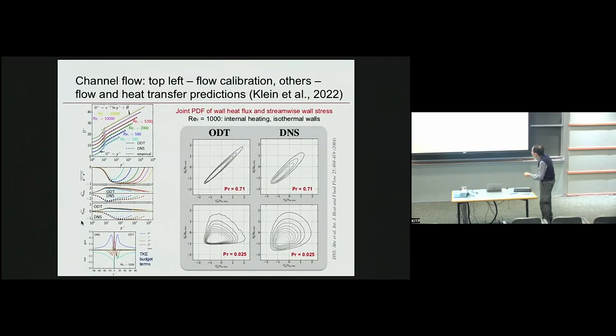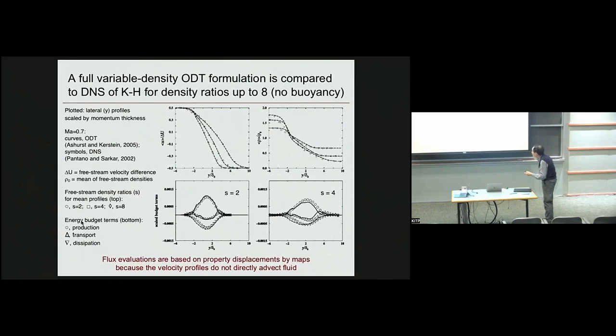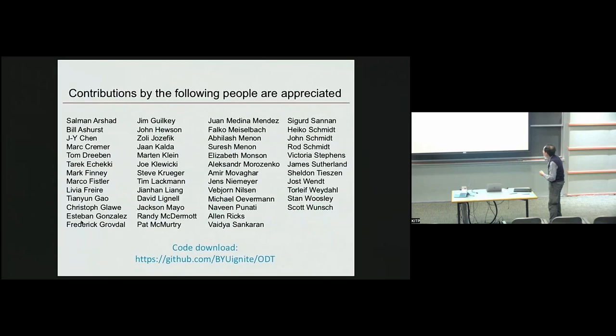Here we have a heated channel. We have the moments, and here we have this is the turbulent kinetic energy budget, but this is the joint PDF of the instantaneous wall shear stress and the instantaneous wall heat flux, and ODT DNS, and it shows the Prandtl number dependence. This one, this discussion of Kelvin-Helmholtz, this is just variable density Kelvin-Helmholtz for different density ratios, and mean profiles, and turbulent kinetic energy budgets.